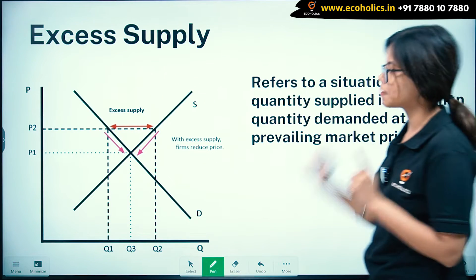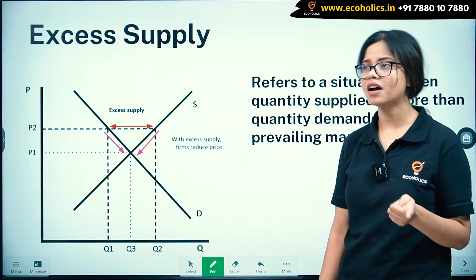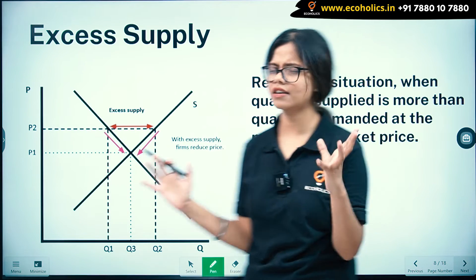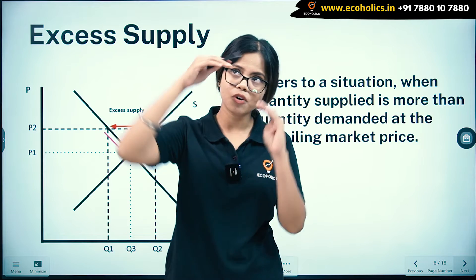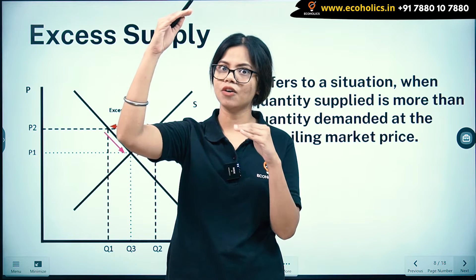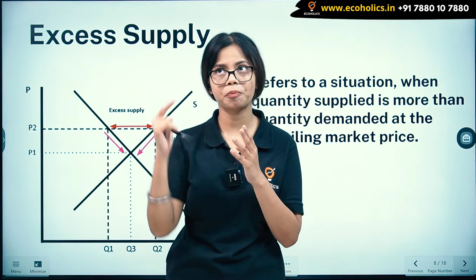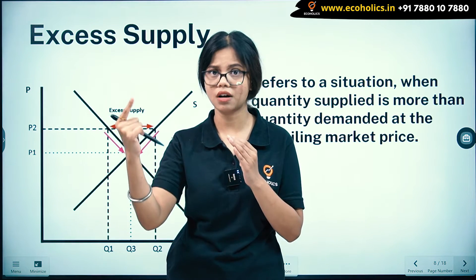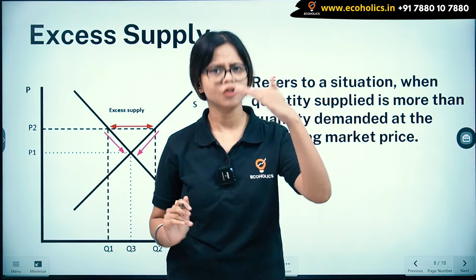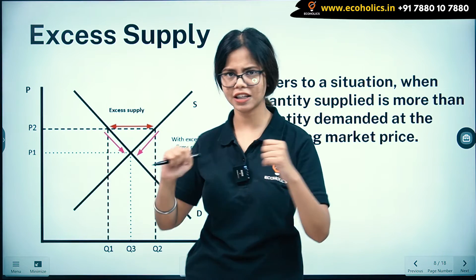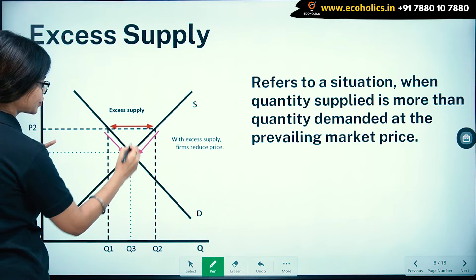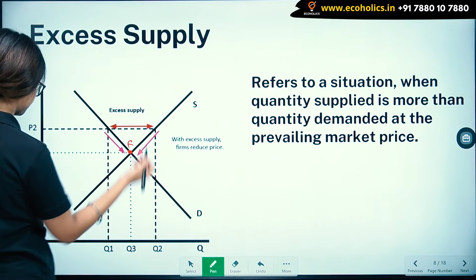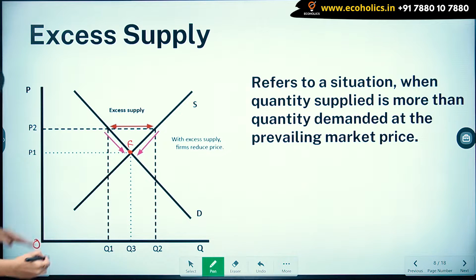Moving further — excess supply. When will excess supply occur? When the price is high and supply is very high, and because the price is so high, demand will be low. Let's see from the graph. This is your equilibrium again at high price OP2.